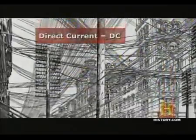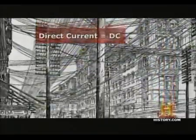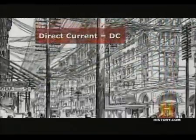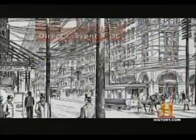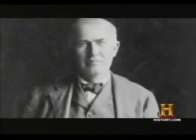The electrical system he found deficient was called direct current, or DC. Edison, Tesla's former employer, was a major investor in DC power.